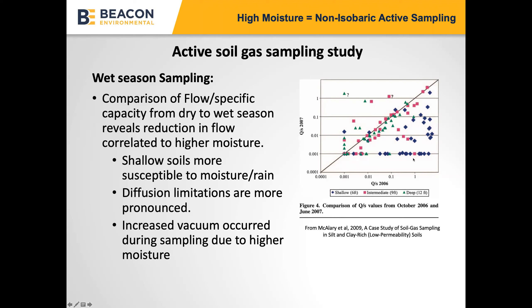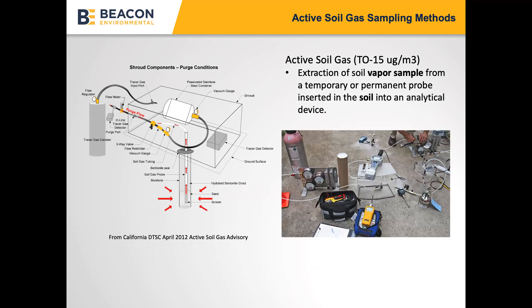This indicates that diffusion limitations are more pronounced when there are high moisture conditions, resulting in increased vacuum and decreased flow. The change in advective flux or pressure induced by vacuum extraction sampling is resulting in an effective change in what the steady-state concentration is going to be once you get the analytical results back.